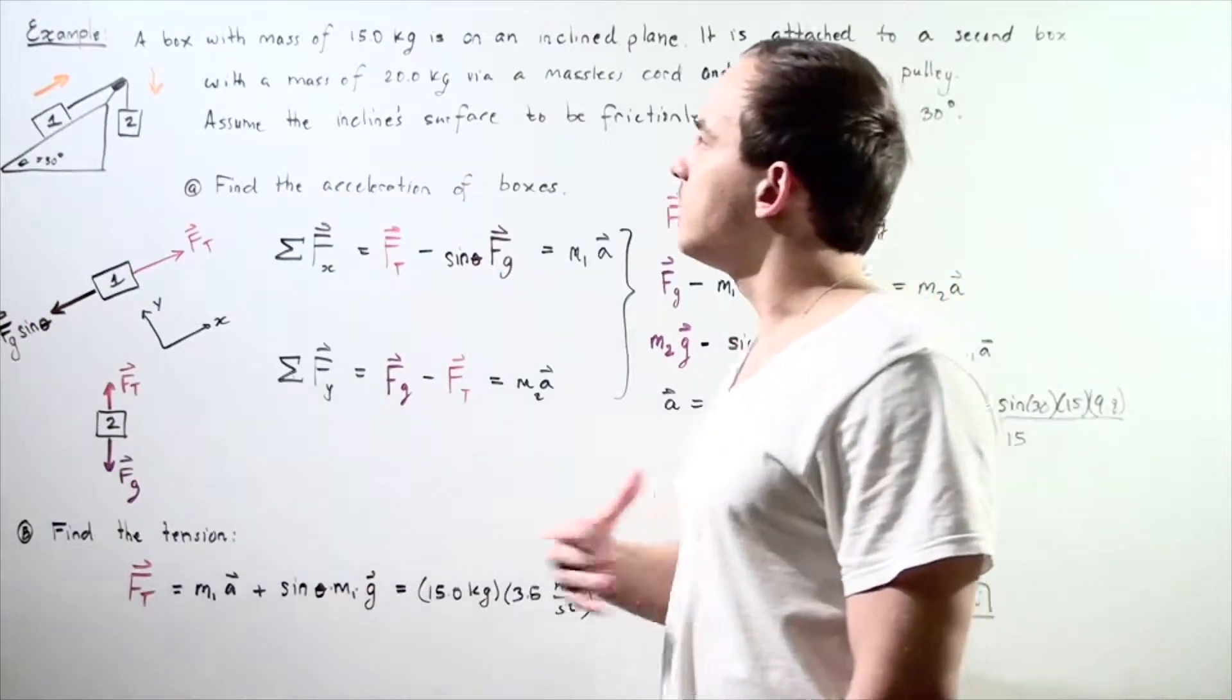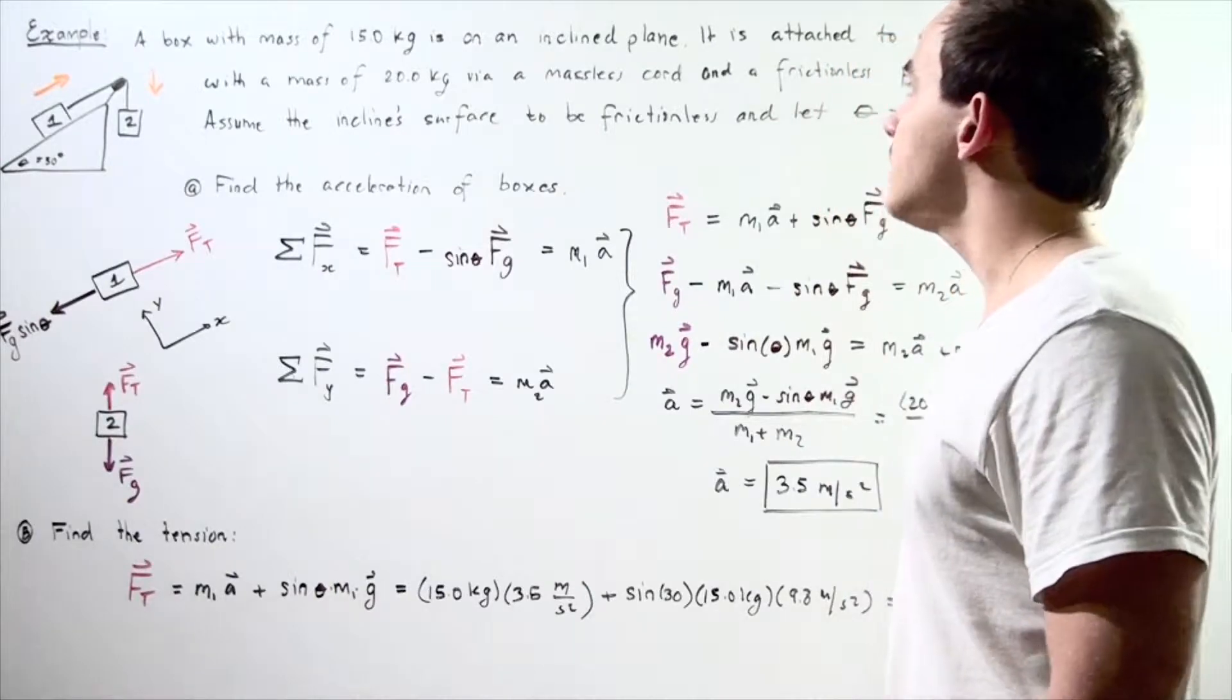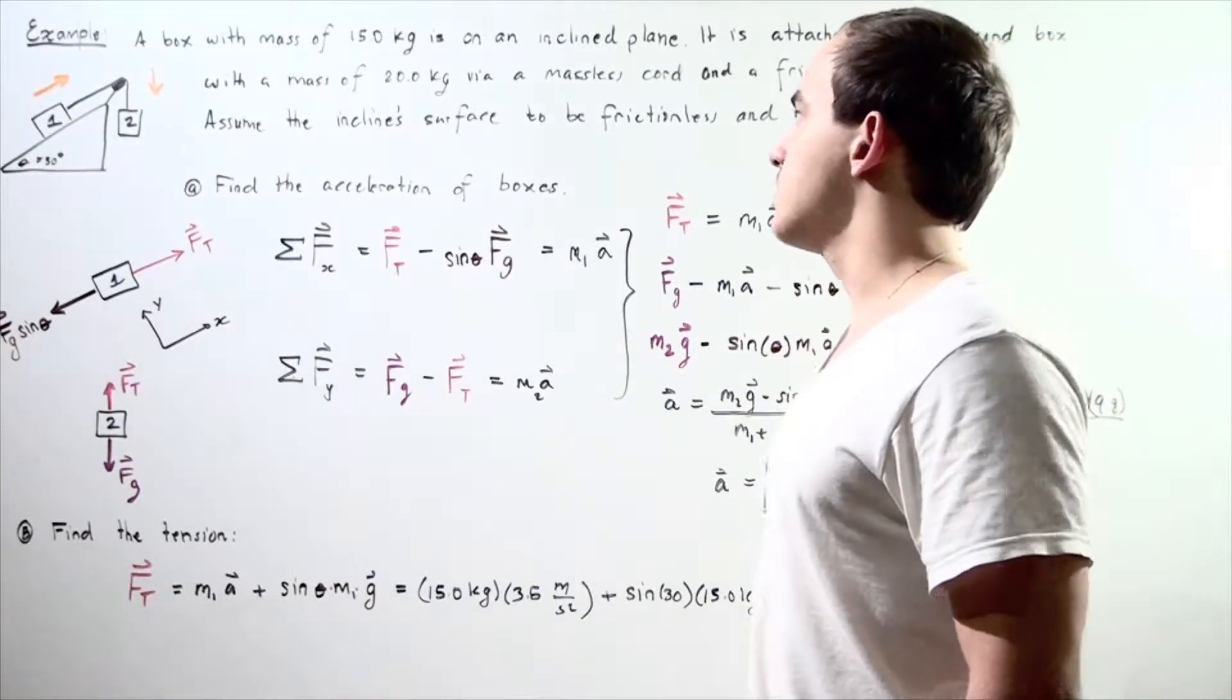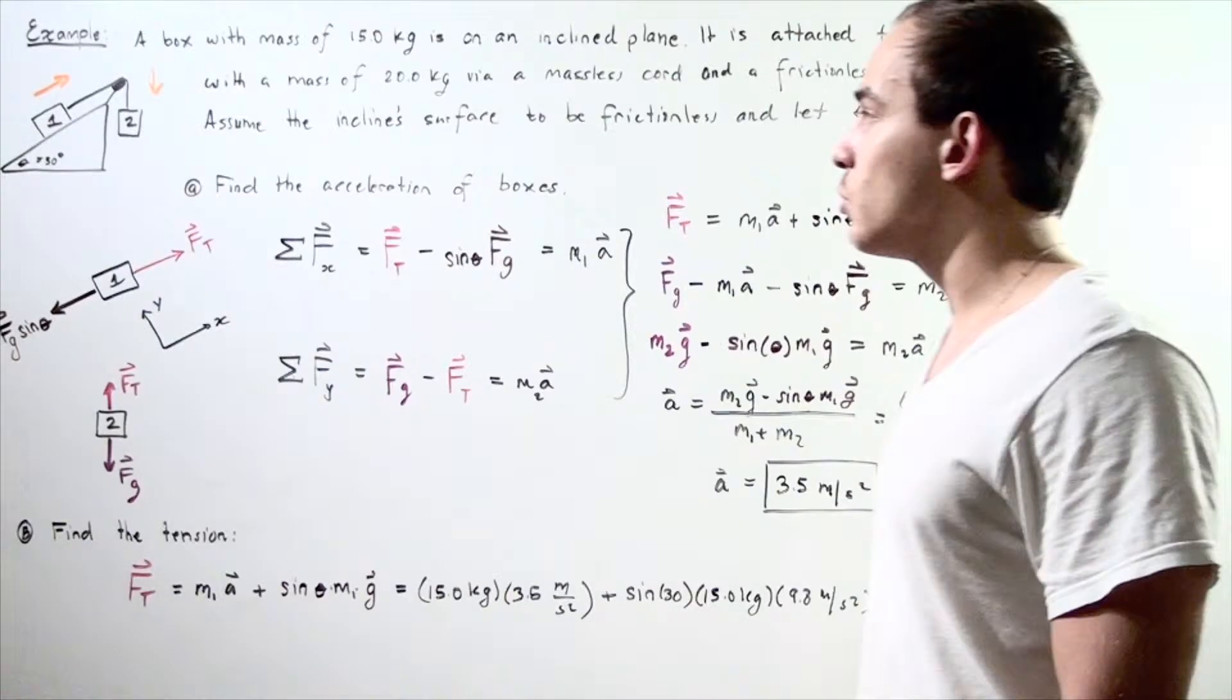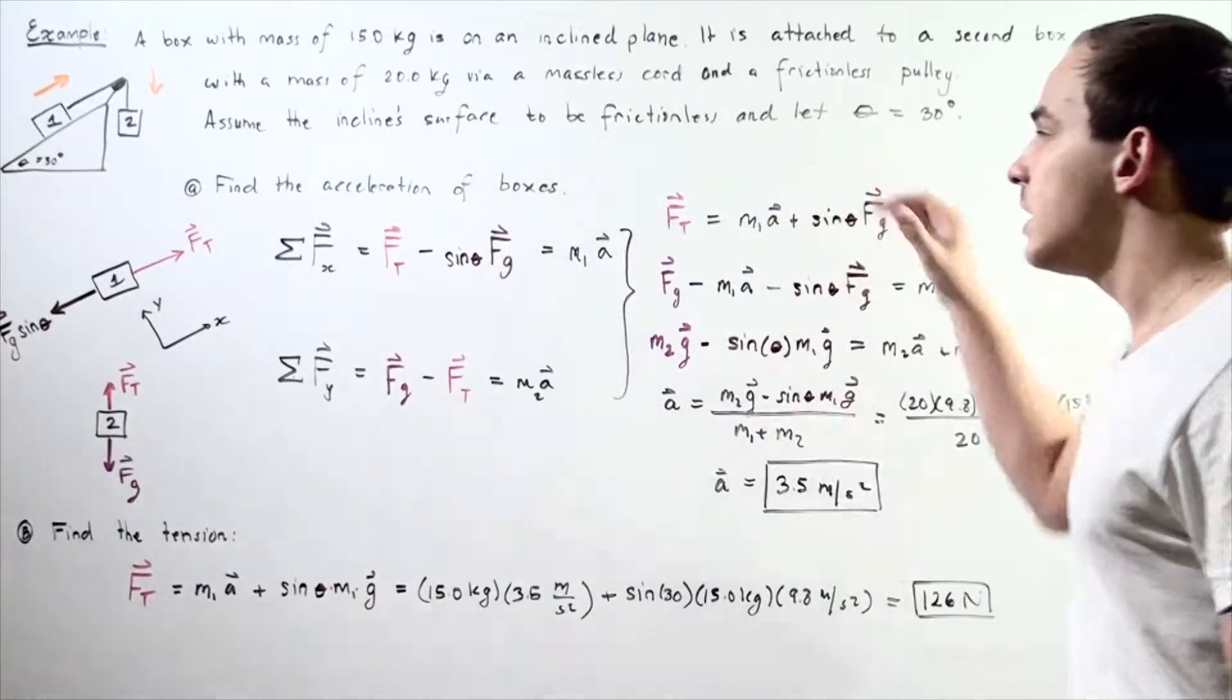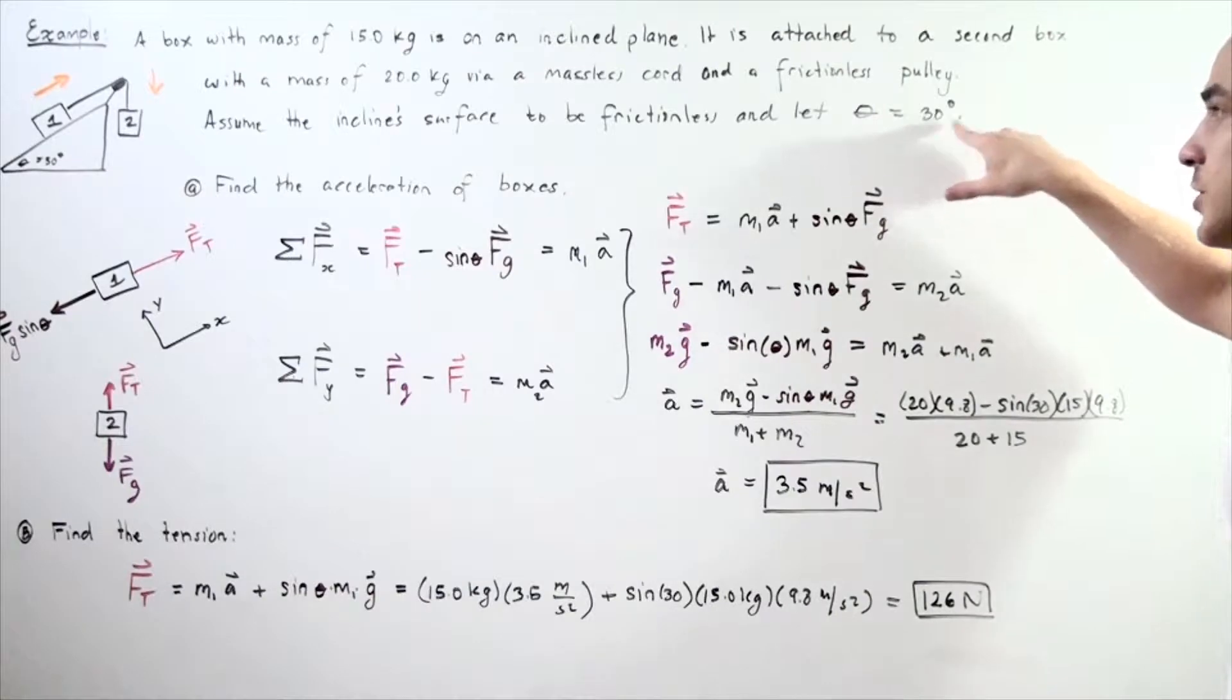Let's look at our example. A box with a mass of 15 kilograms is on an inclined plane. It is attached to a second box with a mass of 20 kilograms via a massless cord and a frictionless pulley, as shown in the following diagram. Now, assume the inclined surface to be frictionless and the angle between the inclined plane and the horizontal is 30 degrees.